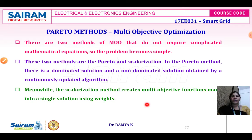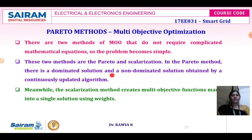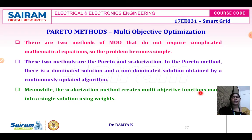The Pareto method gives two solutions: dominated solution and non-dominated solution, which are continuously updated. Scalarization is a method of converting a multi-objective function into a single solution using a weight function.